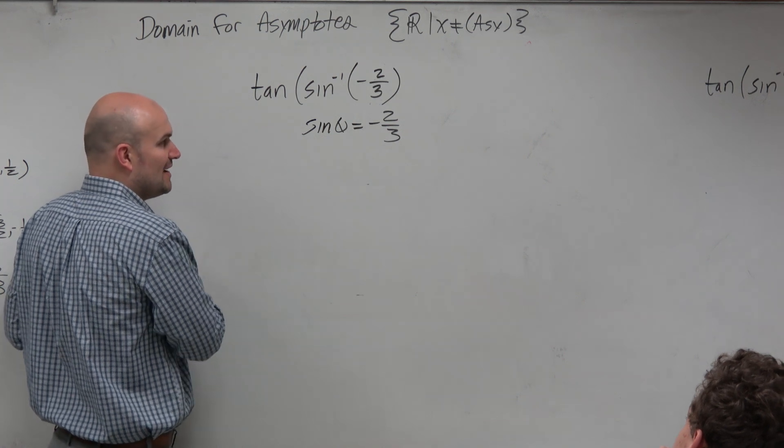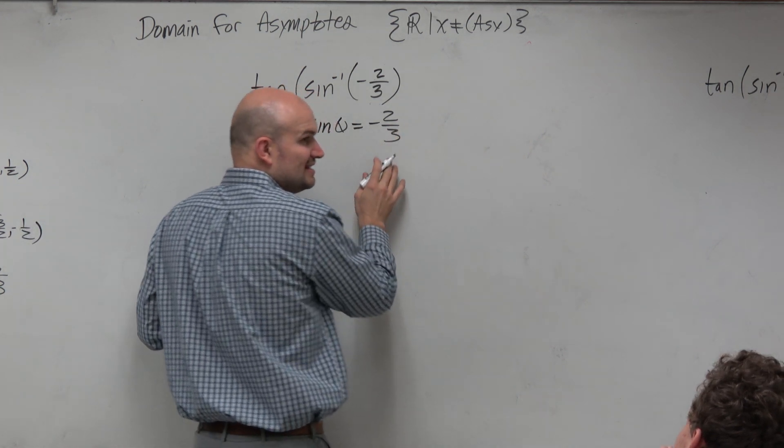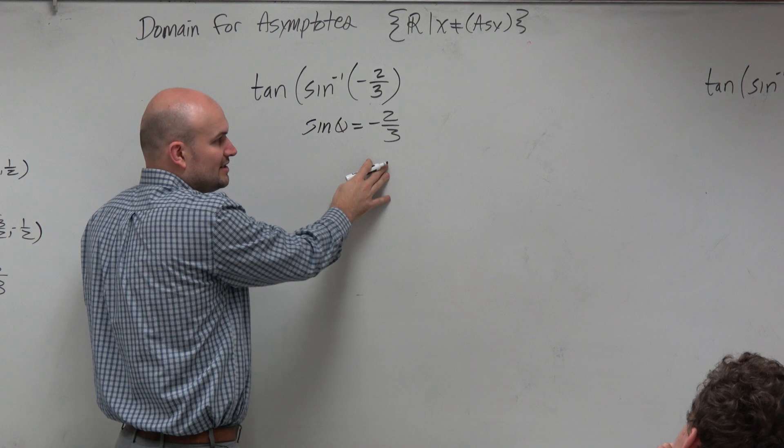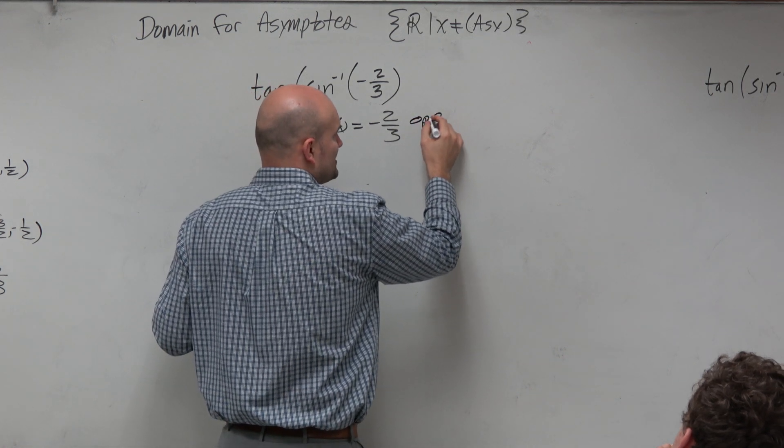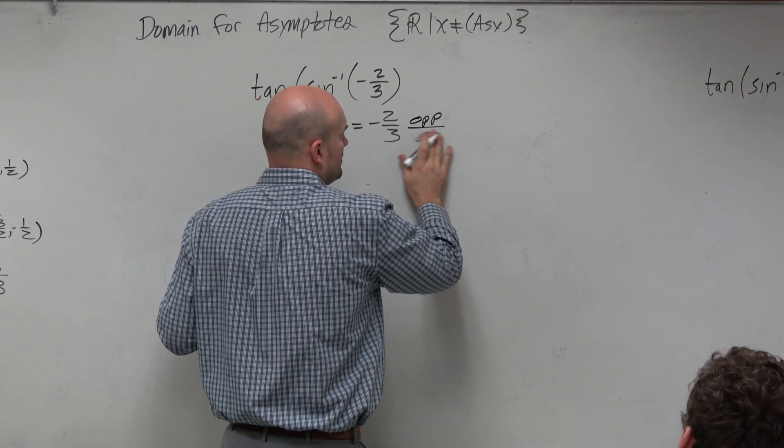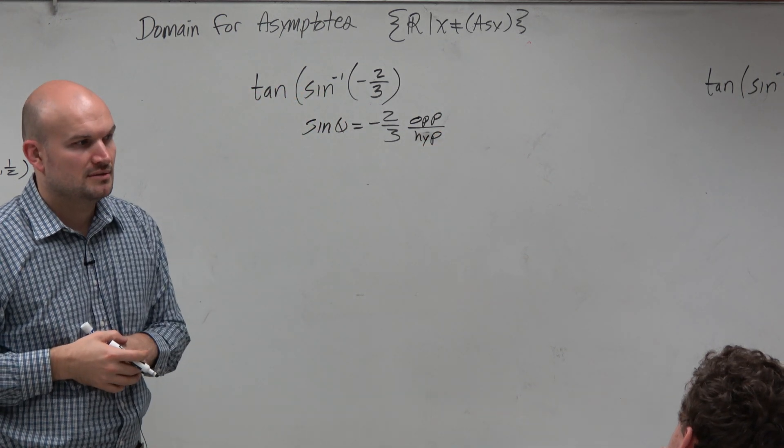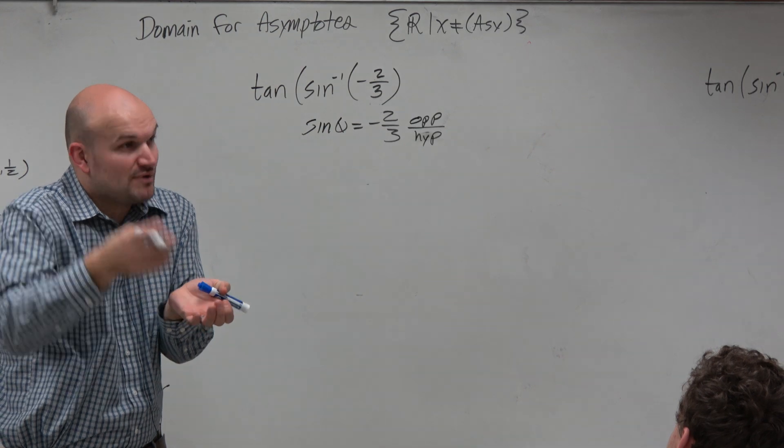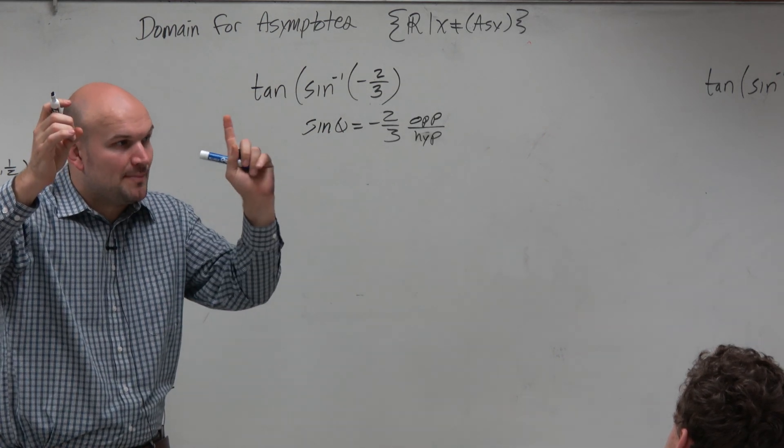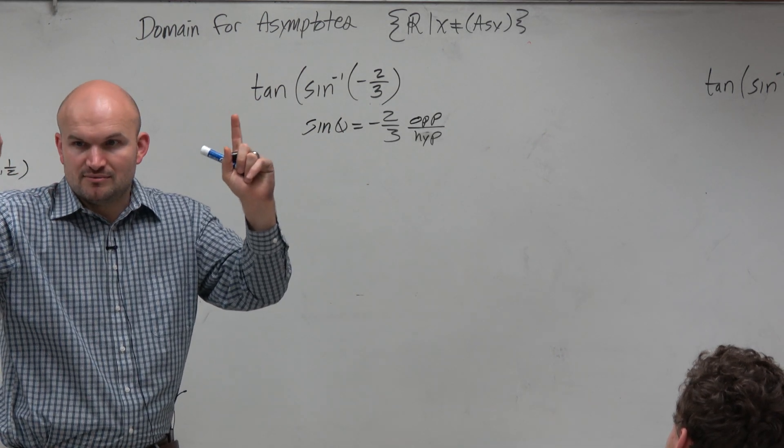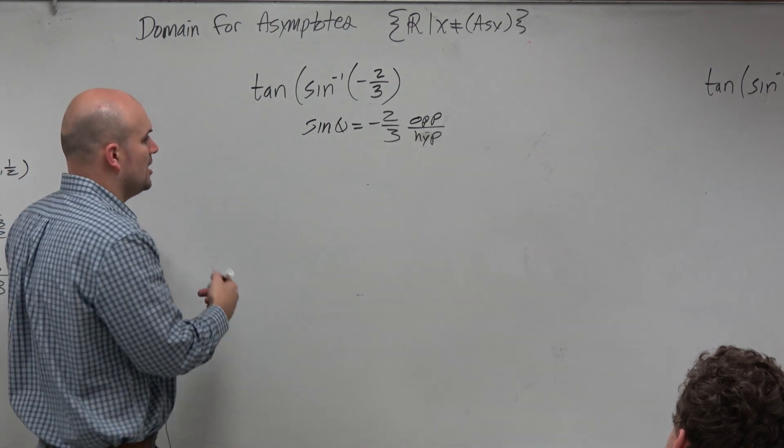So what that means is that helps us out. I can actually represent this, not by always the y coordinate on the unit circle, but I can go back to day one. And I could say, well, this is opposite over hypotenuse. Because that's what the unit circle is anyways, right? It's just y over the hypotenuse, but the hypotenuse is 1, correct? We just use the unit circle to help us out.